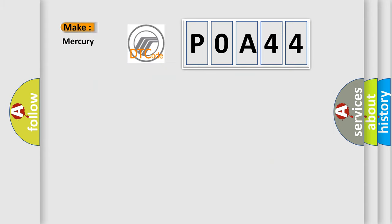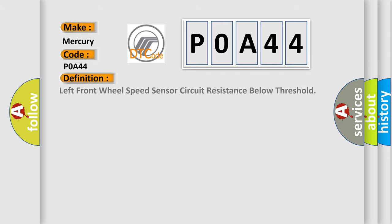The number itself does not make sense to us if we cannot assign information about what it actually expresses. So, what does the diagnostic trouble code POA44 interpret specifically? The basic definition is: Left front wheel speed sensor circuit resistance below threshold.